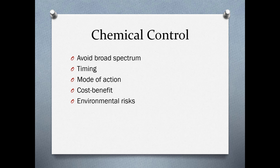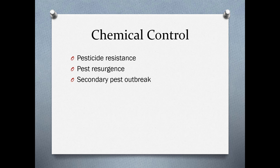If you're going to use chemical controls, avoid broad-spectrum types. Timing is important—treat at the most vulnerable point of the pest's life cycle. It's really important to rotate your pesticides and use a variety of modes of action so you don't build resistance. Consider whether the benefit of using a pesticide outweighs the cost, and always account for environmental risks. Be aware of pesticide resistance and pest resurgence—you may knock down thrips only to have aphids come along, and pests that survive may produce offspring resistant to that pesticide, leading to secondary pest outbreaks.